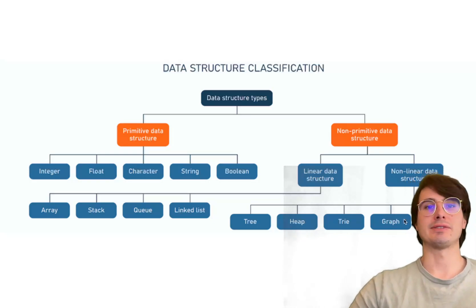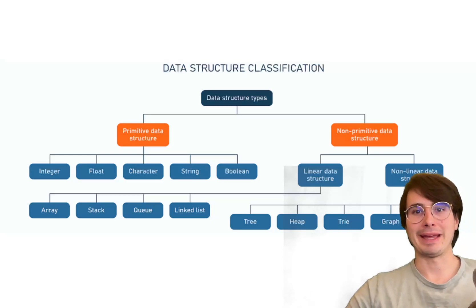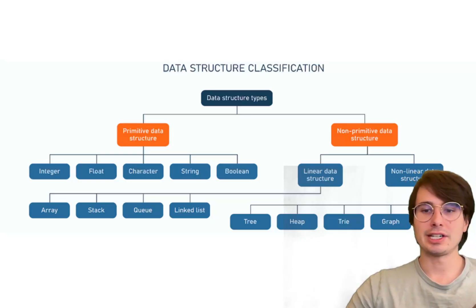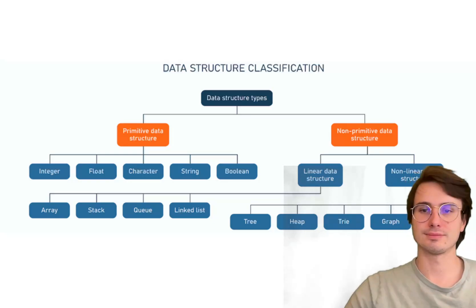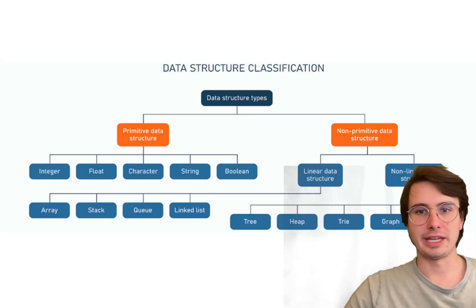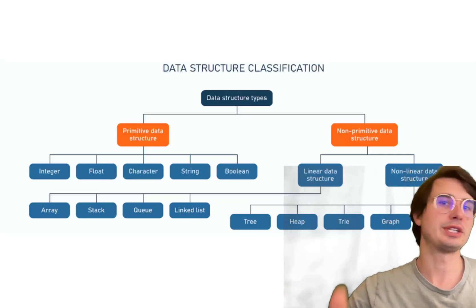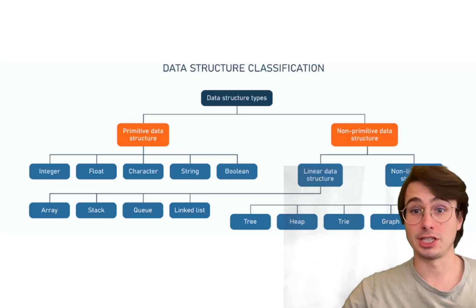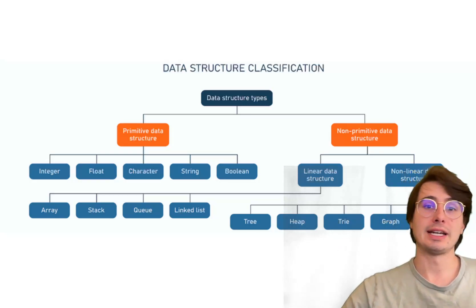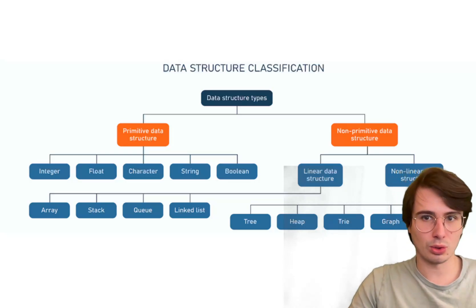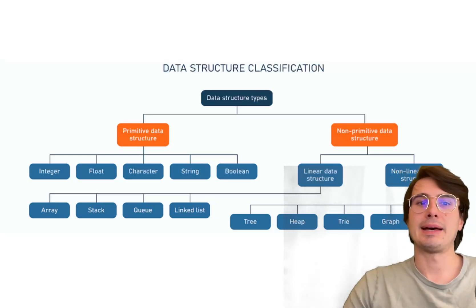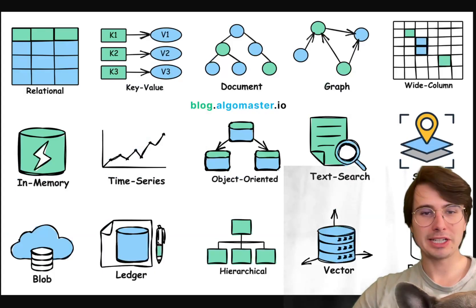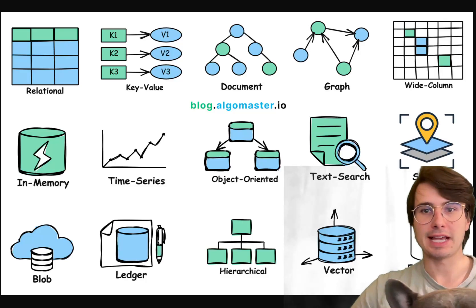The first thing is having an understanding of different data structures and the basics of data. That means understanding the types of data you'll encounter as a data engineer — things like JSON files, how databases work with rows and columns, semi-structured data, unstructured data, and how these different data types are handled, stored, and processed.